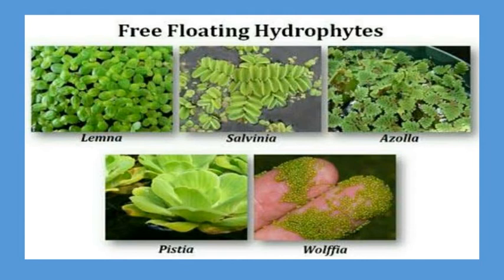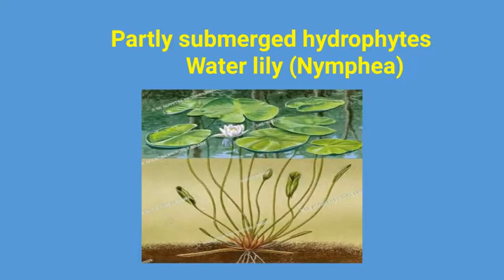On the basis of distribution of hydrophytes in water, hydrophytes can be free floating. We have examples of Lemna, Salvinia, Azolla, Pistia, and Wolffia. They are found floating on the surface of water.